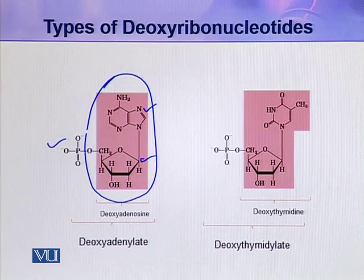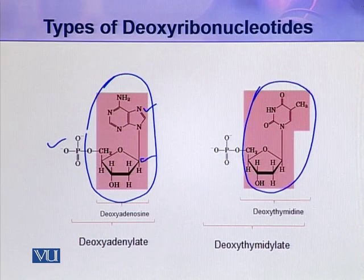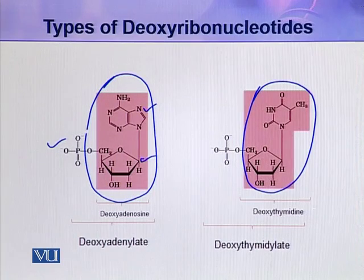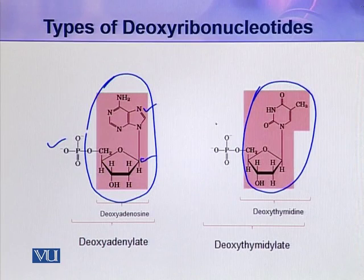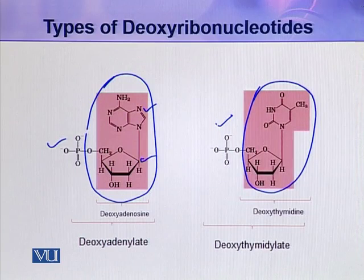In this next picture, the colored portion is again a nucleoside. In this nucleoside, the nitrogenous base is thymine, so this nucleoside is called deoxythymidine. If phosphoric acid is also included in this molecule, it becomes a nucleotide, and this nucleotide is called deoxythymidylate.